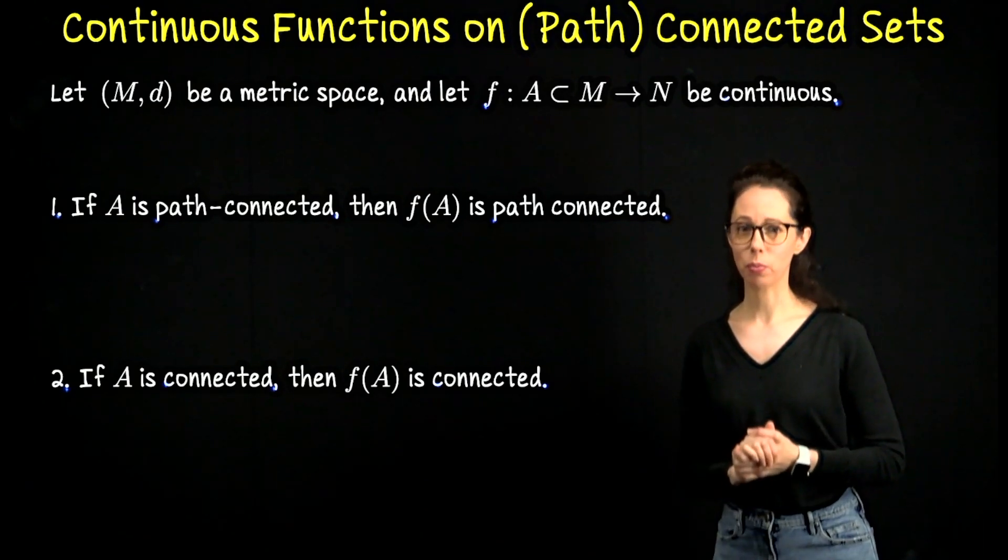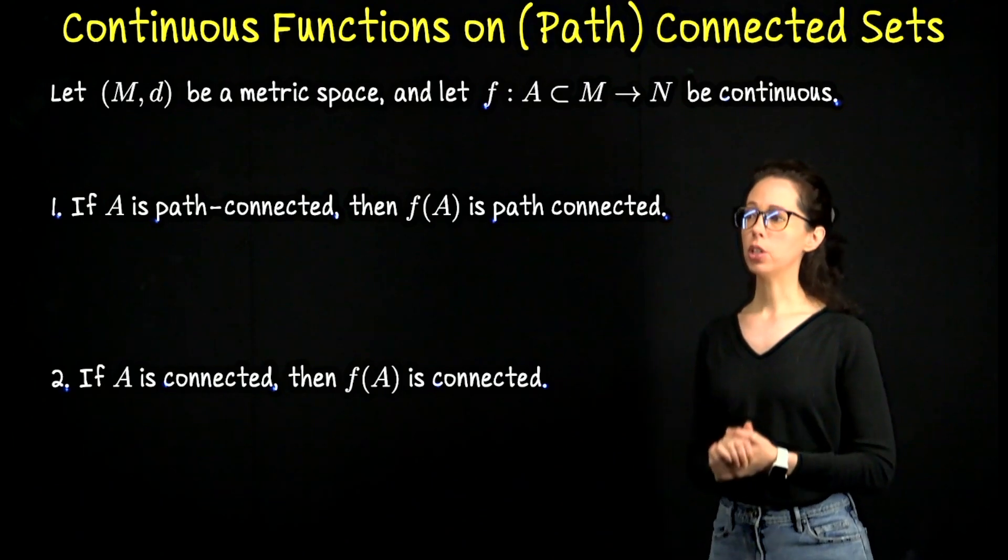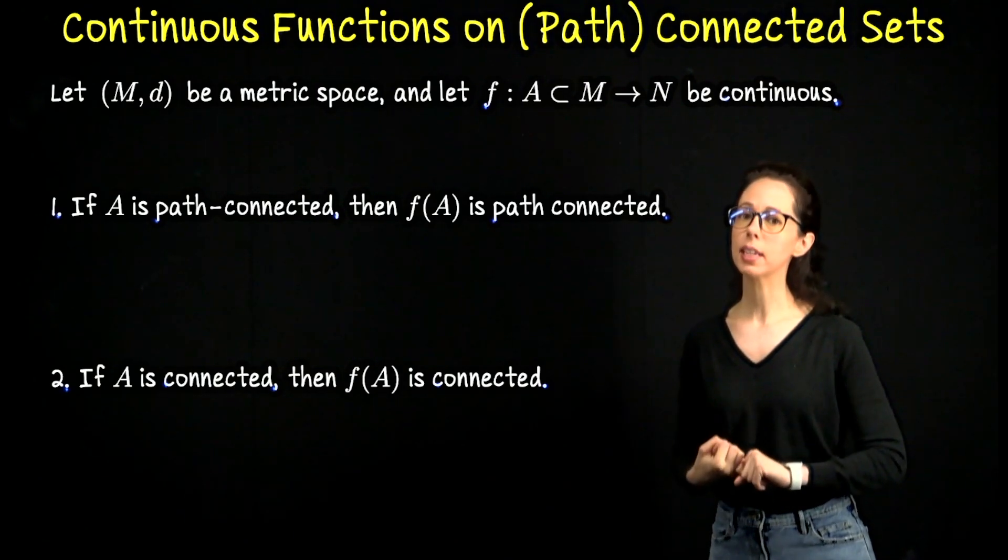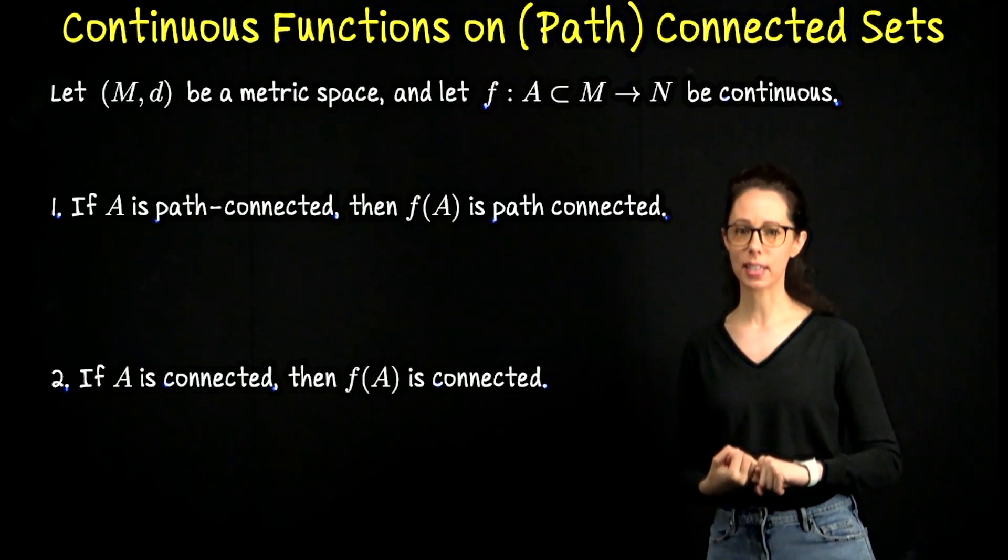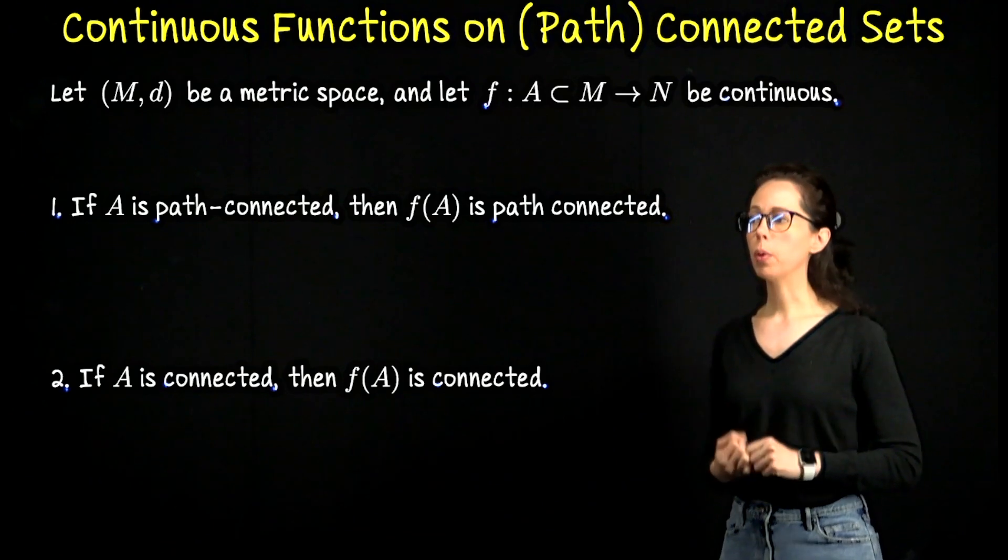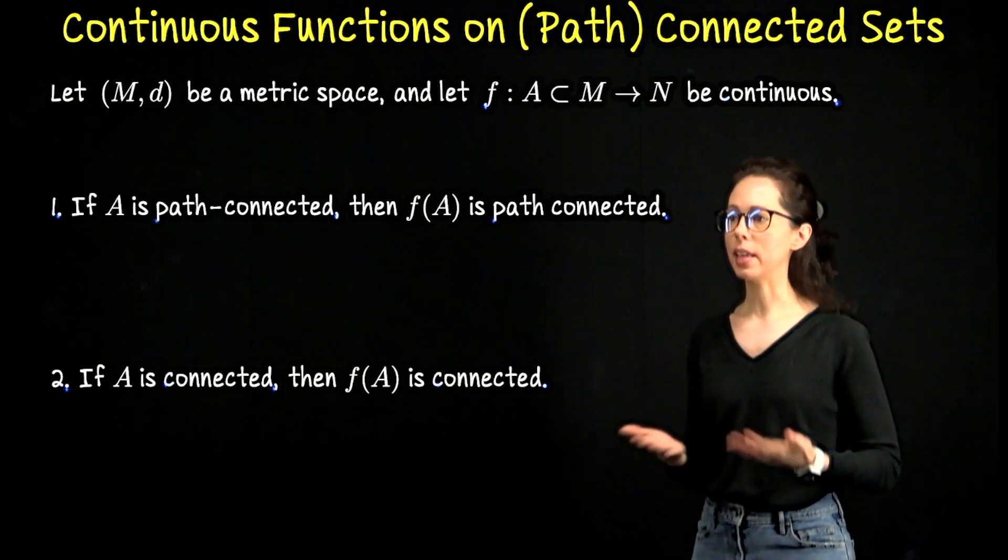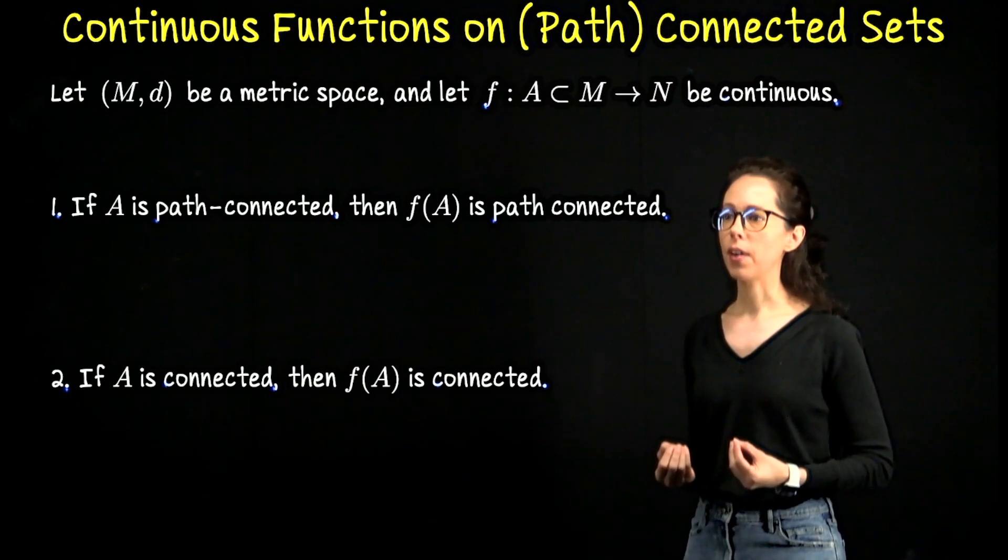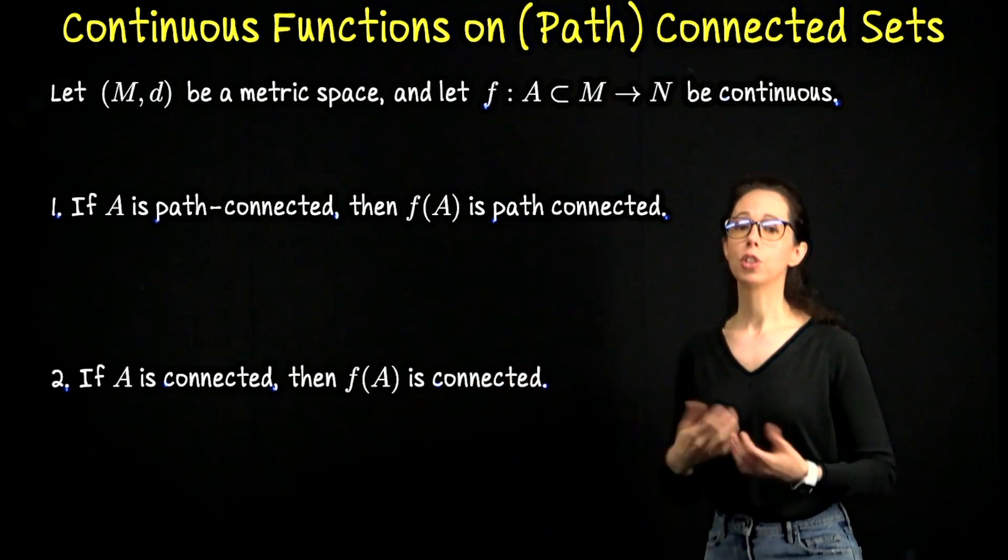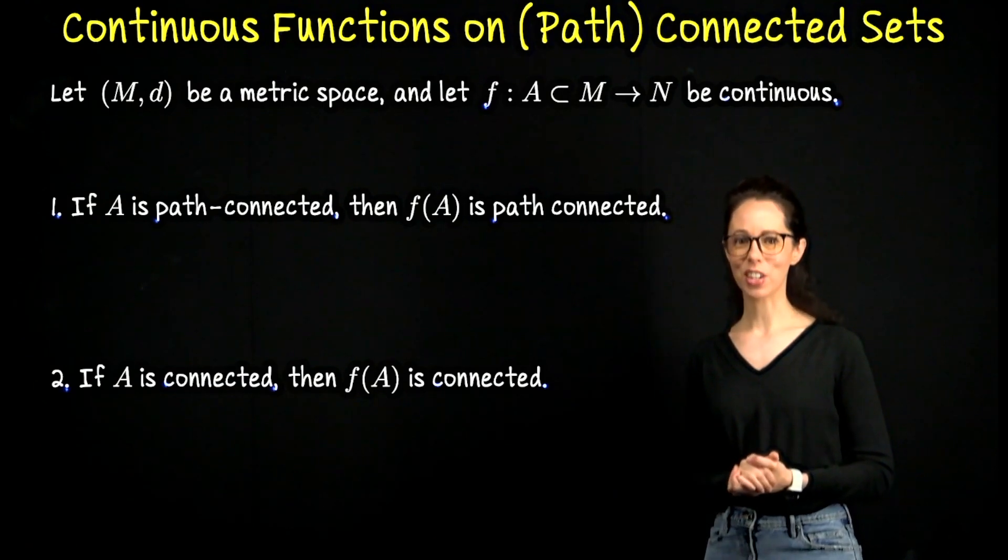I want you to be ready for these proofs. Pause and make sure that you have revisited the definition of a path connected set and the definition of a connected set. We will prove that both of these images f of A satisfy the definition of a path connected set and satisfy the definition of a connected set, which requires us to be familiar with those definitions.